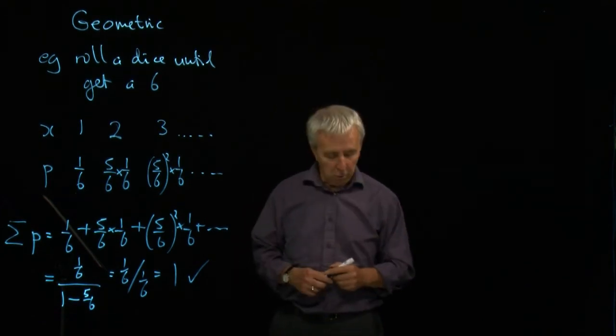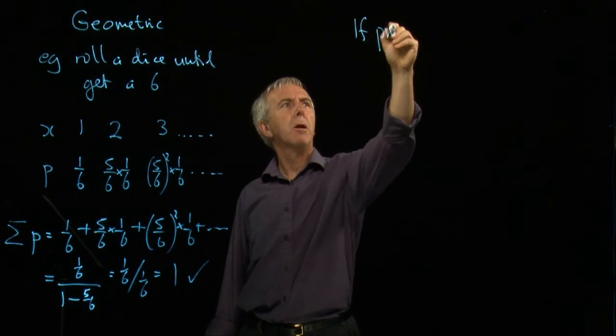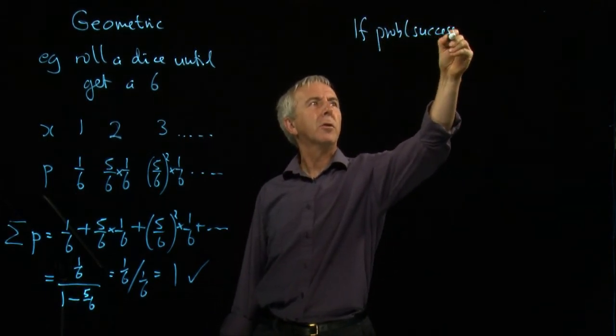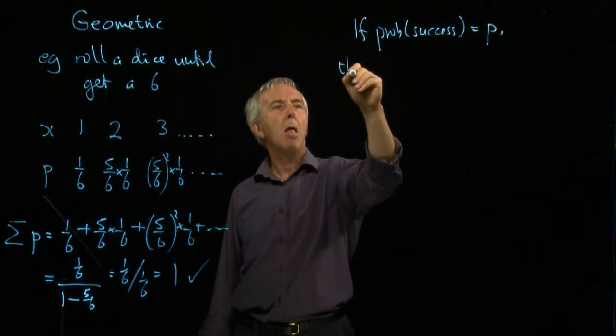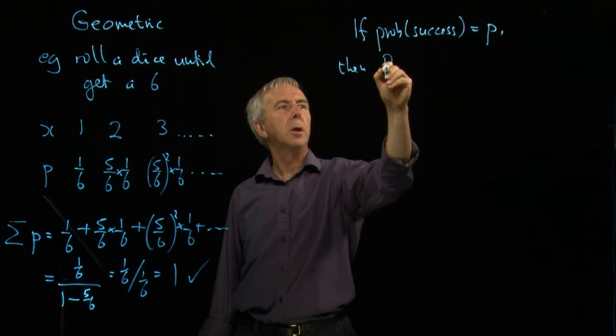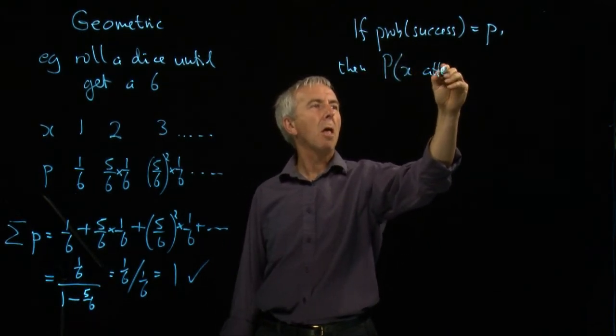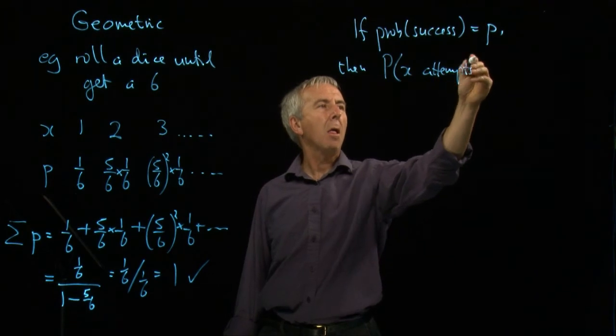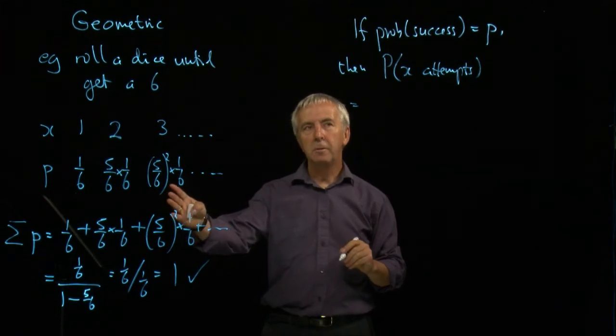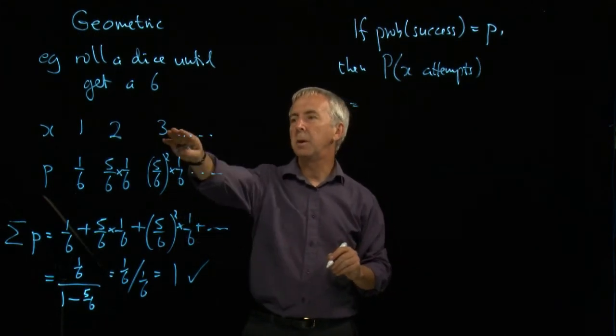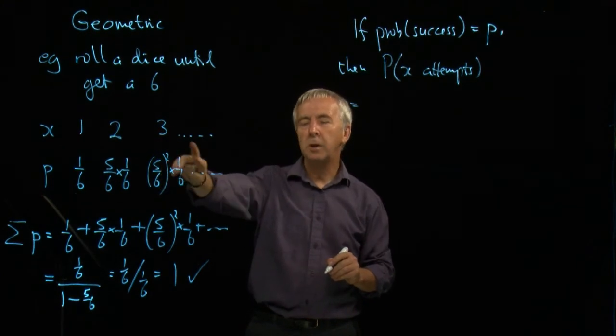Let's look at the general formula. If the probability of a success is p, then the probability of x attempts, what's going to happen? We've got to have fails for the first x minus one. When x was three, we had two fails and then the success.